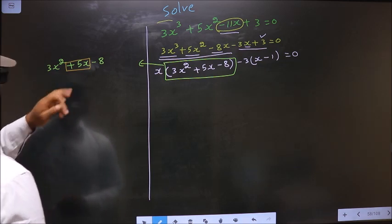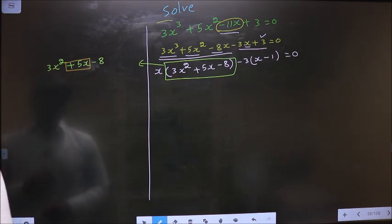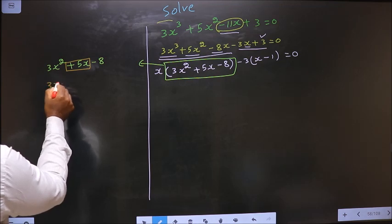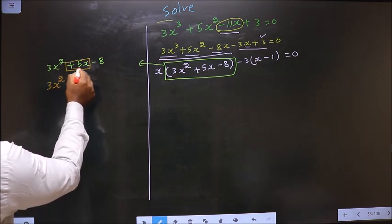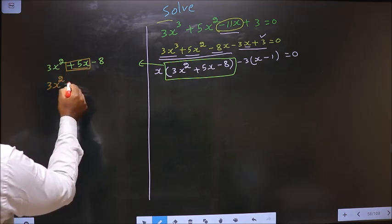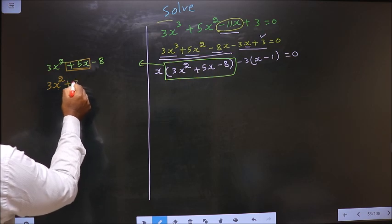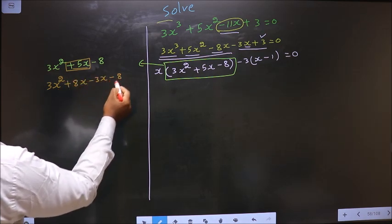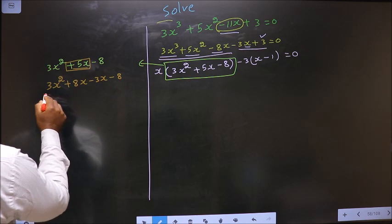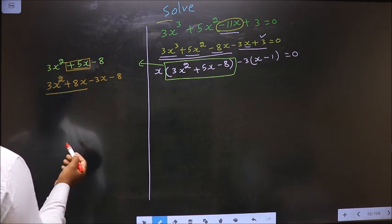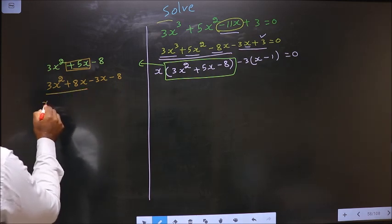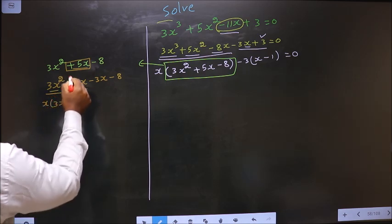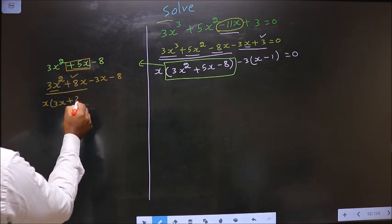So 3 into 8 is 24, and 8 minus 3 is 5. So now in place of 5x, I write plus 8x minus 3x. Now from these two terms what can be taken out common is x, so here you get 3x and here you get plus 8.